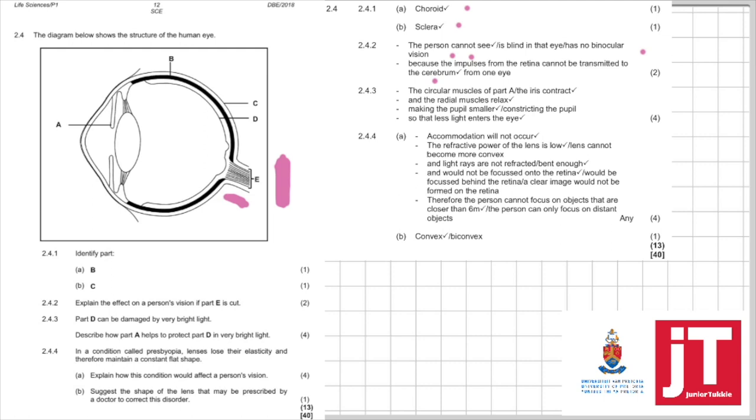2.4.3. Part D can be damaged from very bright light. Part D is the retina. And in the retina are your photoreceptor cells. So they tell you, part D can be damaged from very bright light. Describe how part A, which is the iris, how it protects the retina from bright light. So they are asking now bright light. That's the key and it's four marks. So what does the iris do? They're asking us about the pupillary mechanism in bright light. Here you should know the circular muscles of the iris contract. You must say the iris. The radial muscles relax. The pupil constricts to let less light in and that will protect the retina by preventing too much light to enter the retina. Nice question.